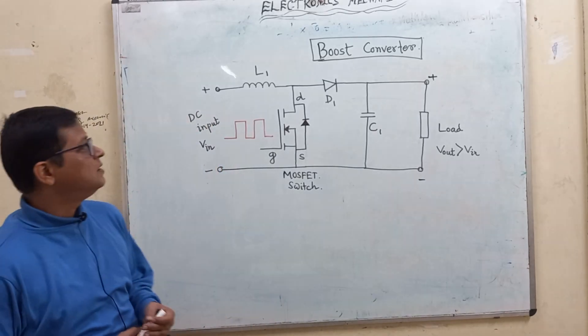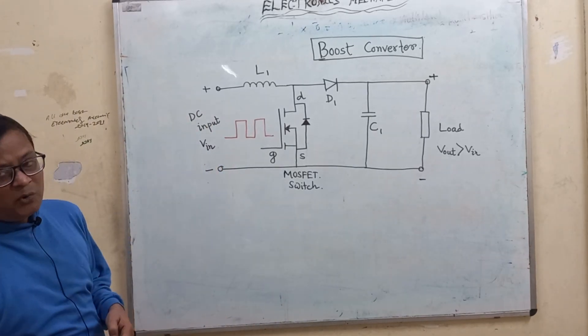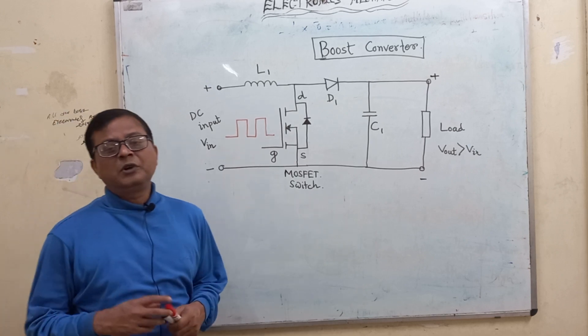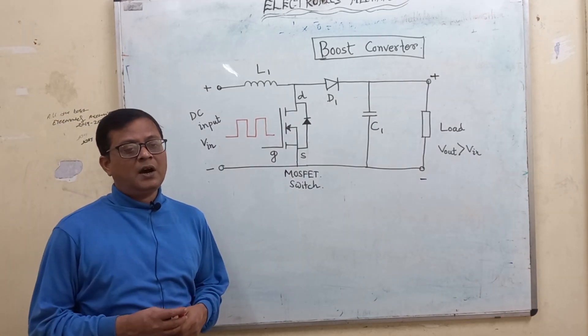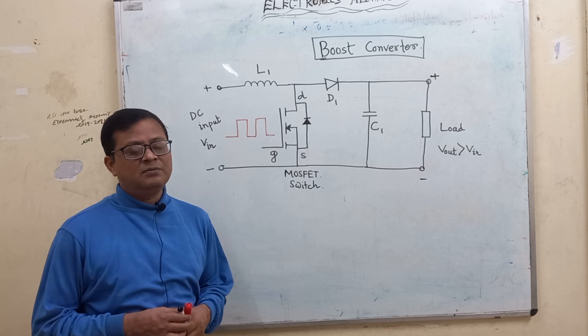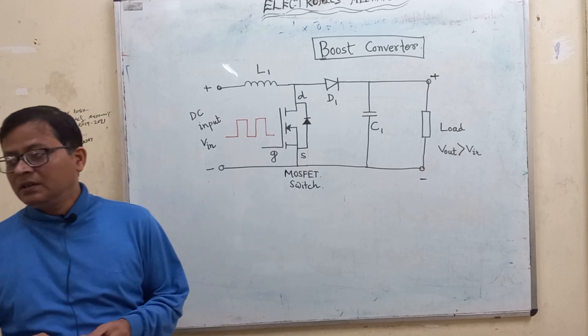I am going to discuss the Boost Converter. The Boost Converter gives the input low DC, and the output is correct. Therefore, the DC voltage output will be obtained.